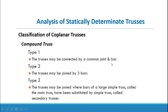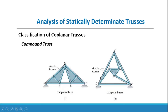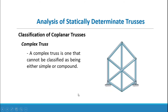There are three types of compound truss: Type 1, where trusses are connected by a common joint and bar; Type 2, where trusses are joined by three bars; and Type 3, where bars of a large simple truss called the main truss have been substituted by a simple truss called secondary trusses. These configurations are shown in the compound truss diagrams.